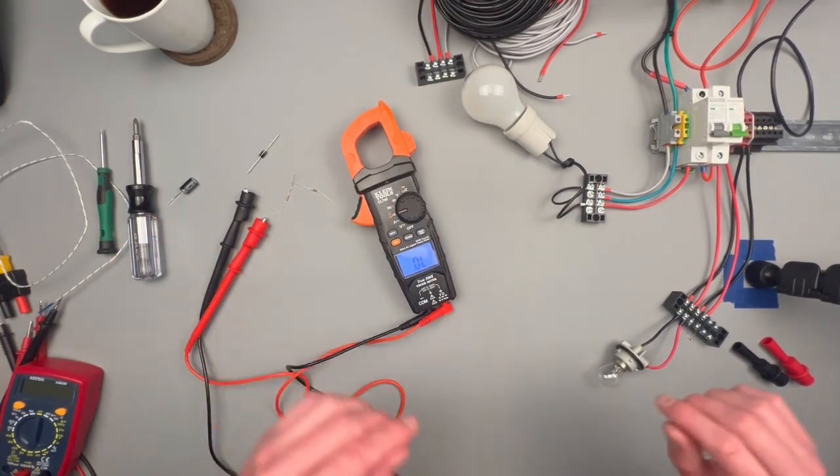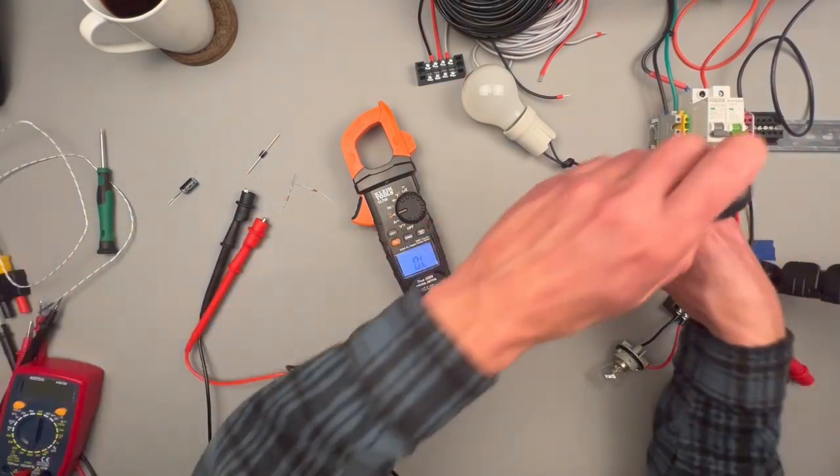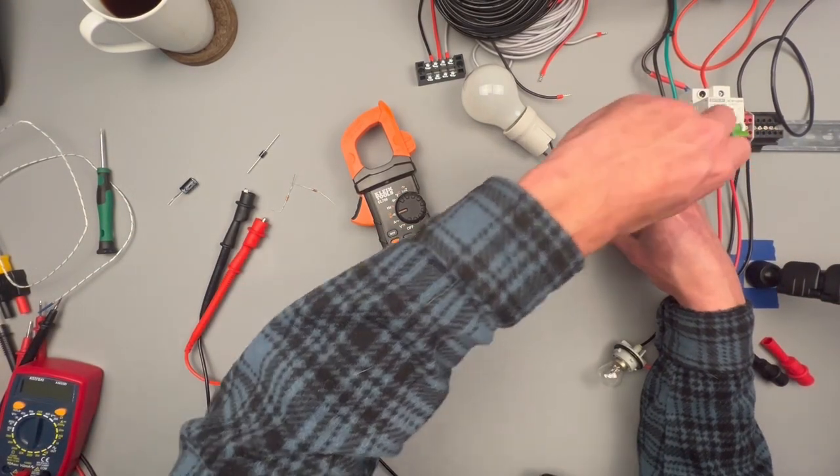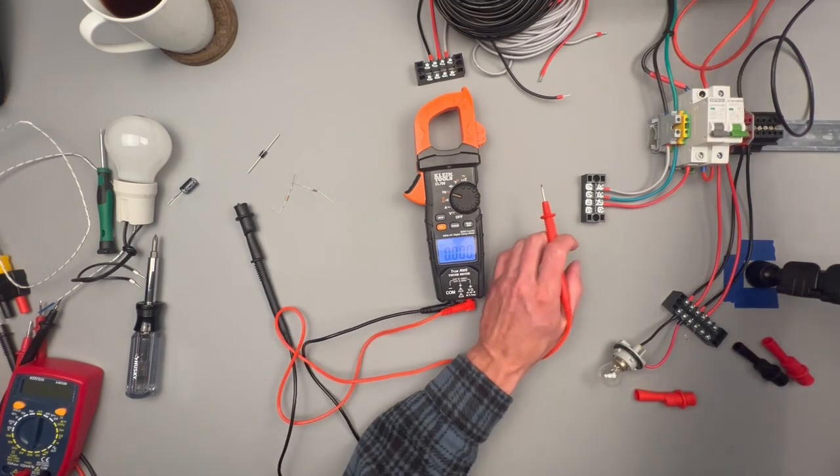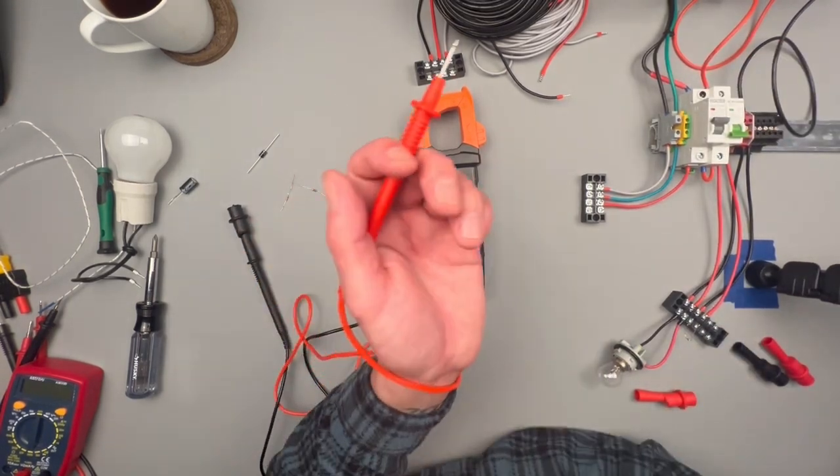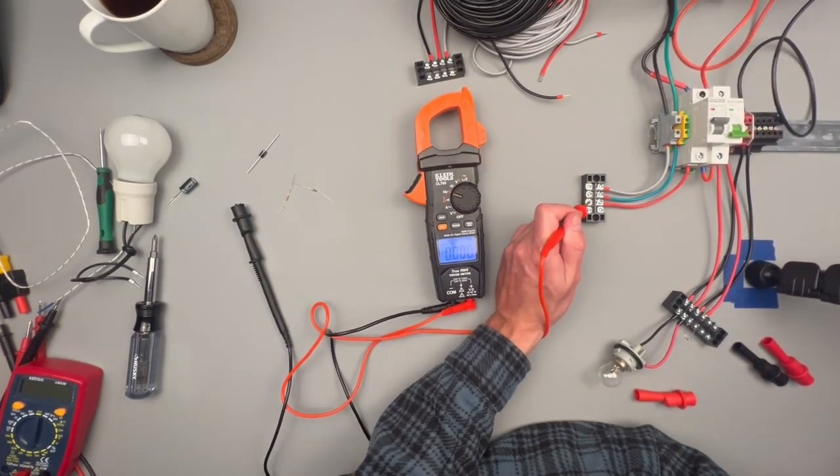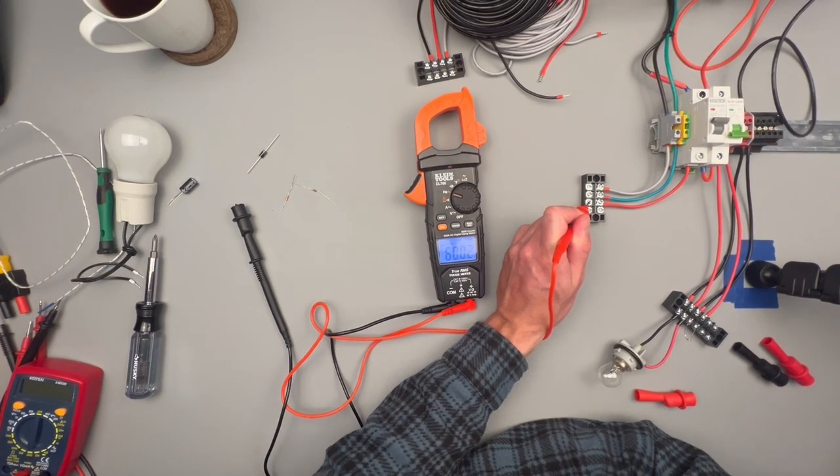Hertz. This one is actually pretty interesting. I found while testing. So if we go to our Hertz function, let's get an AC source going here. Hertz can be measured with one probe. And so when I just use one probe, I'm getting 60 Hertz.